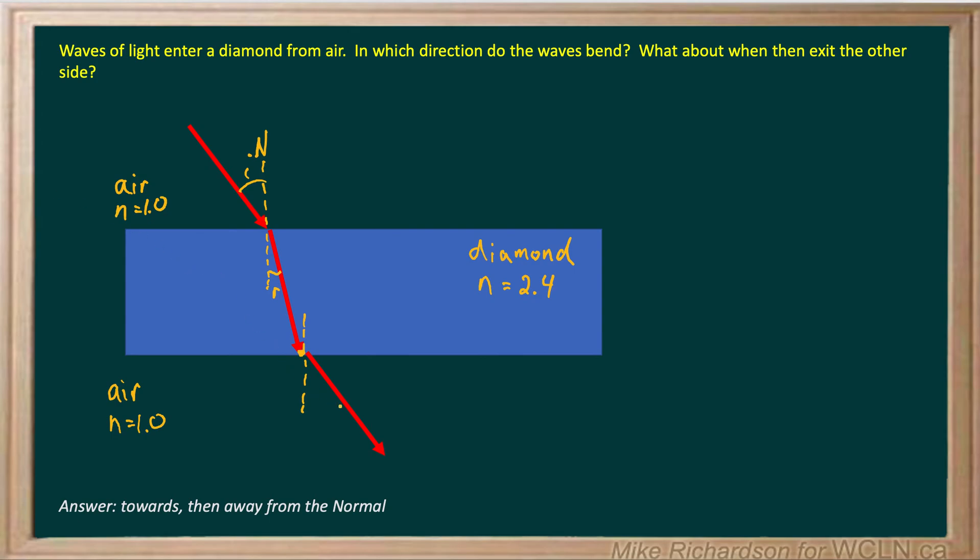The final angle of refraction on this surface will be exactly the same as the angle of incidence on that surface. And that's because this interface and this interface are parallel to each other. So on the way in it bends towards the normal. On the way out it bends away from the normal with those two final angles equal to each other.